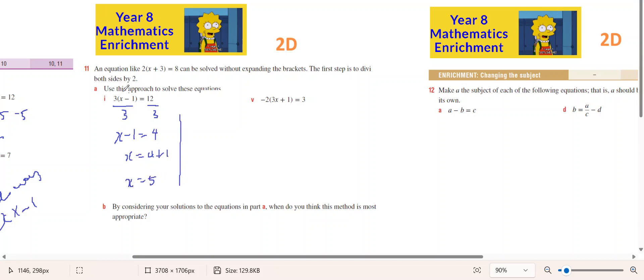The other option is you multiply the brackets out. So 3x minus 3 equals 12, 3x equals 12 plus 3, 3x equals 15, x equals 15 divided by 3, x equals 5.